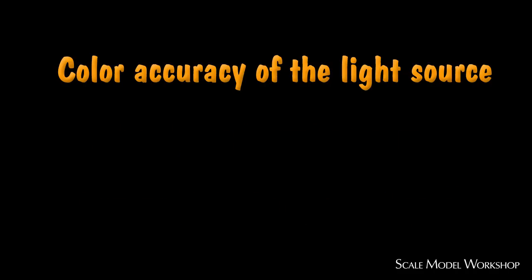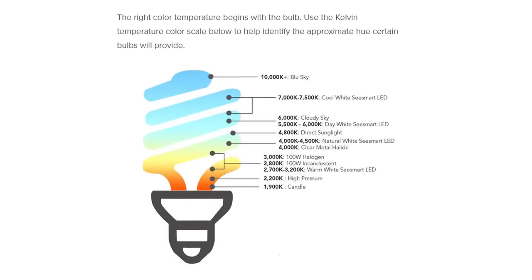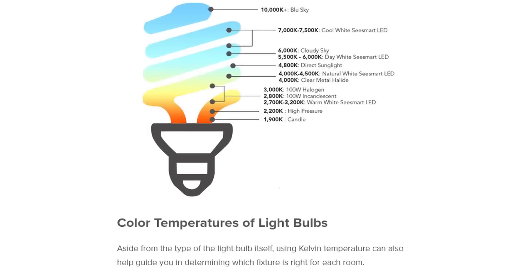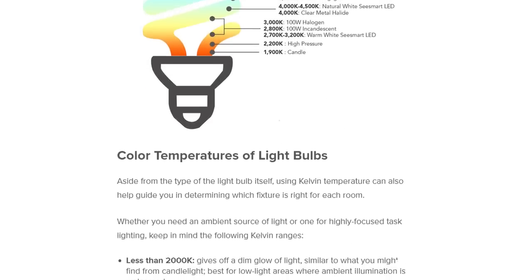The top of my list has always been color accuracy. Typically, you'll see the color of a light listed as a temperature. But for the most part, this value alone is meaningless.